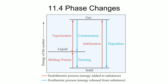Likewise, if we want to convert a liquid into a gas, we have to add heat — so vaporization. And if we remove heat and do condensation, converting the gas into a liquid, that is going to require that we remove heat and that will be exothermic. It is also possible to convert a solid directly into a gas; when that occurs, we call that sublimation.